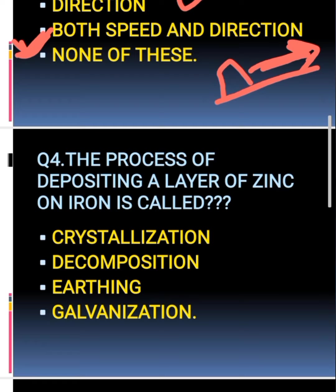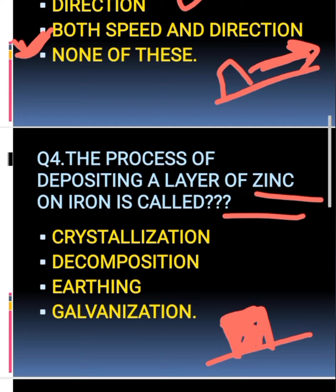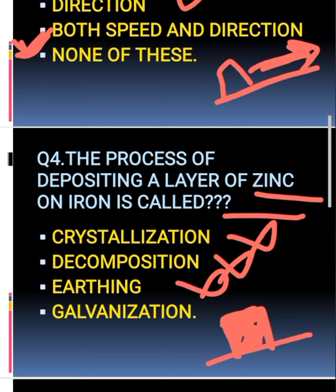The fourth question: the process of depositing a layer of zinc on iron is called what? When iron rusts we call it corrosion. To protect it, we coat zinc on it. This process is not crystallization, not decomposition — it is called galvanization.